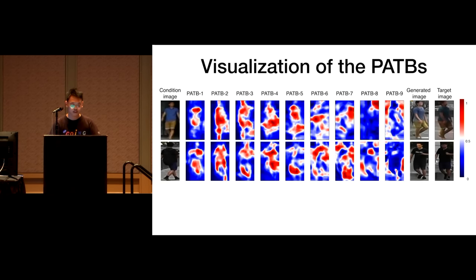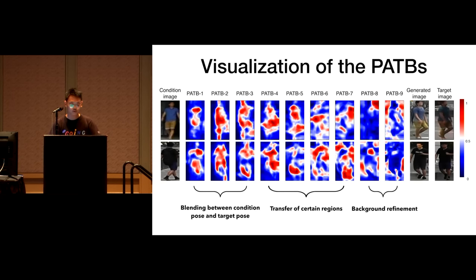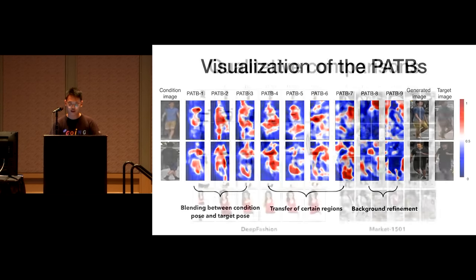In the design of the individual Pose-Attentional Transfer Block (PATB), the pose pathway senses the current construction and decides where to attend and transfer, while the appearance pathway conducts this decision. Current transfer is accumulated with previous transfers through an add operation. To figure out what's going on inside the PATN, we visualize the attention map inside every single PATB. The initial masks are a blending of condition pose and target pose. As the condition pose is transferred towards the target pose, the regions to be adjusted are shrank and scattered.